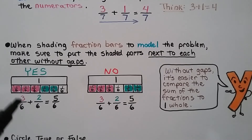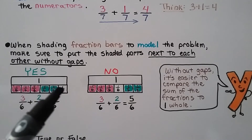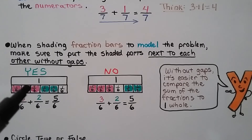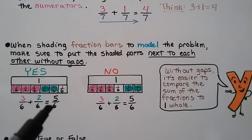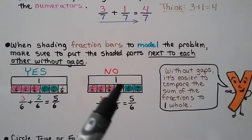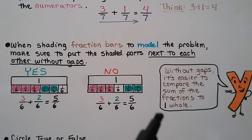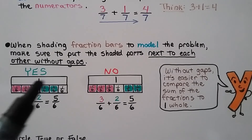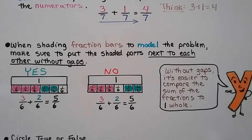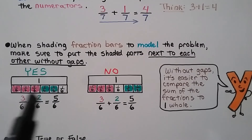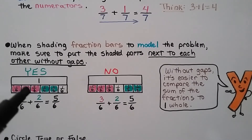When shading fraction bars to model the problem, make sure to put the shaded parts next to each other without any gaps. The correct way: three-sixths plus two-sixths equals five-sixths shaded. If done wrong with a gap in the middle, it's harder to compare. Without gaps it's easier to compare the sum of the fraction to one whole — you want to be able to easily compare the shaded parts to one whole.